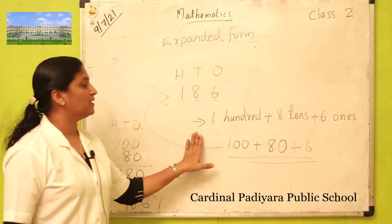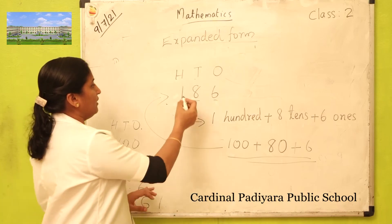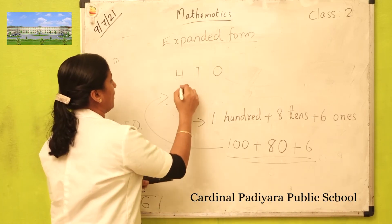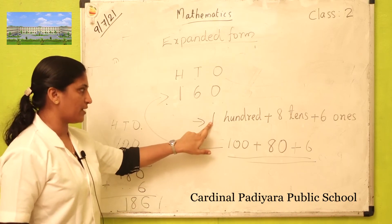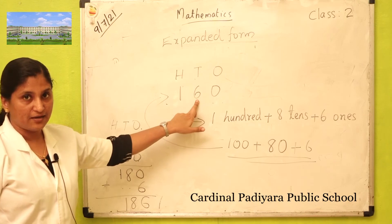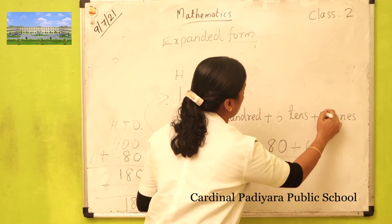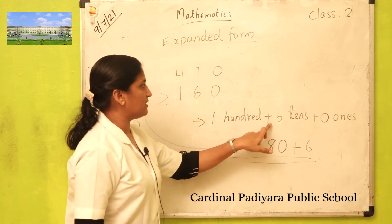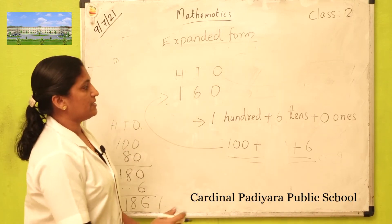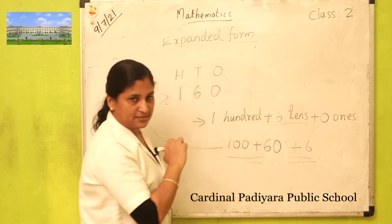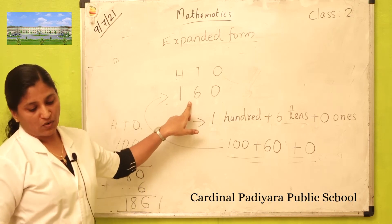Expanded form means writing numbers in terms of hundreds, tens and ones. Look at this number: one hundred sixty. How many hundreds? One hundred. How many tens? Six tens. How many ones? Zero ones. So the expanded form is one hundred plus sixty plus zero — that is one zero zero plus sixty plus zero.